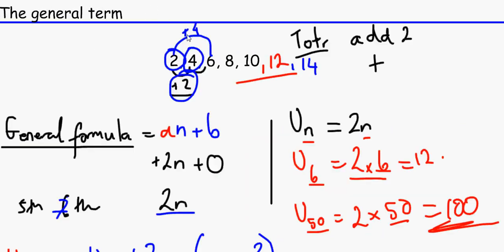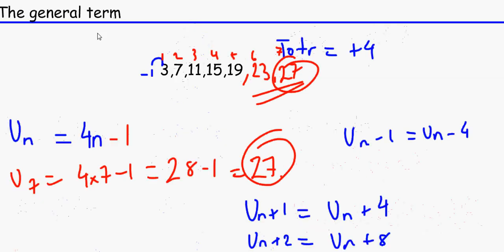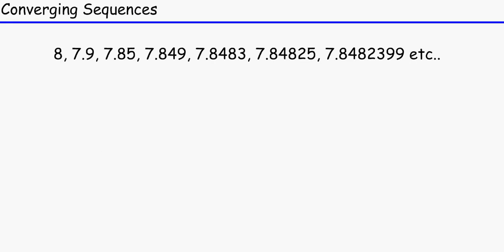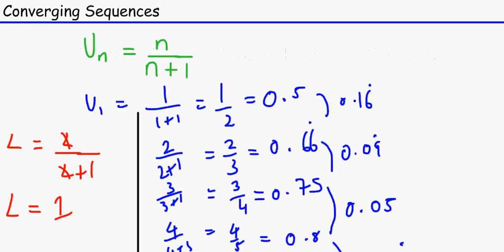These are all arithmetic sequences because they're going at a constant term-to-term rule — it's always 4. For Part 2, we'll be talking about arithmetic sequences, using sigma notation, and binomial expansion for AQA when looking at C2. Thank you and good night.